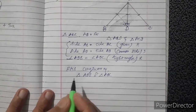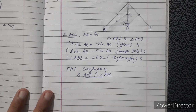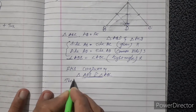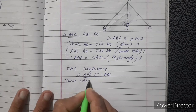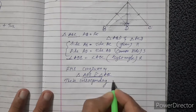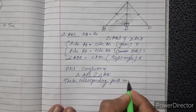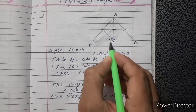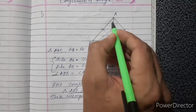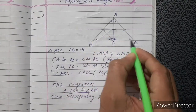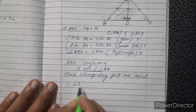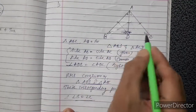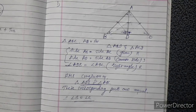Since the two triangles are congruent, their corresponding parts are also equal. Corresponding parts: angles D and D are equal, and the other pairs of corresponding angles are equal. Therefore, angle B equals angle C. It is proved that angles B and C are equal.